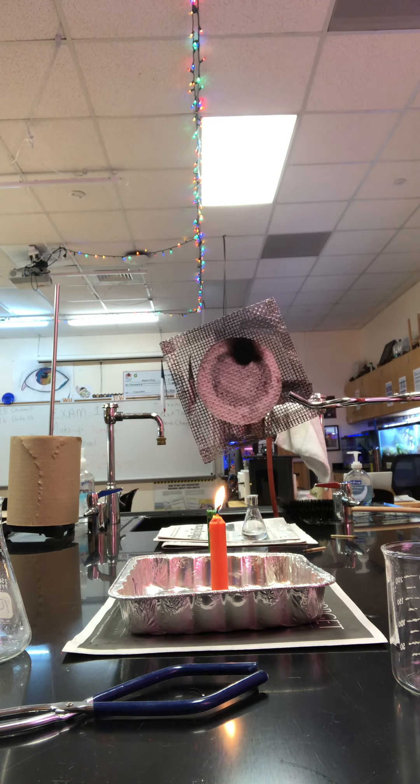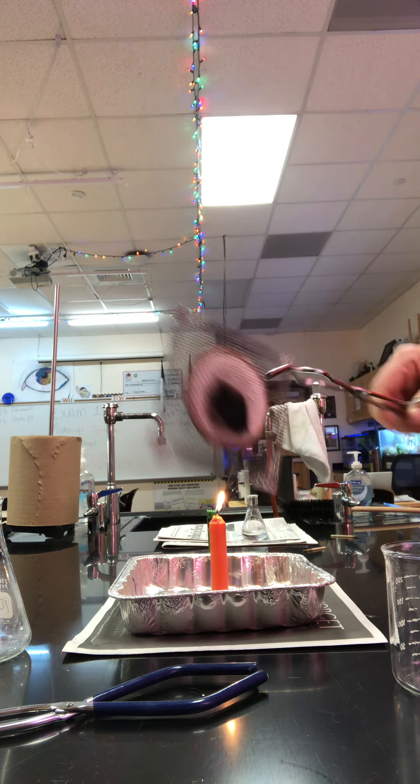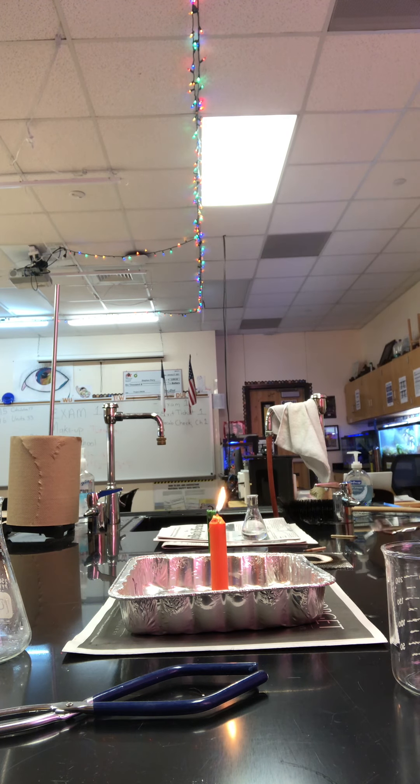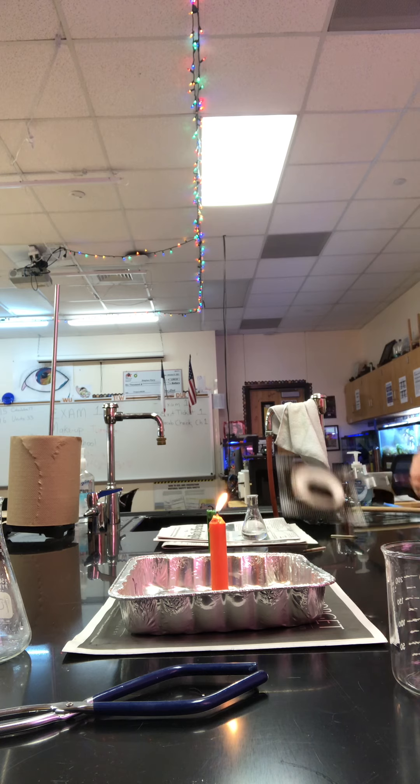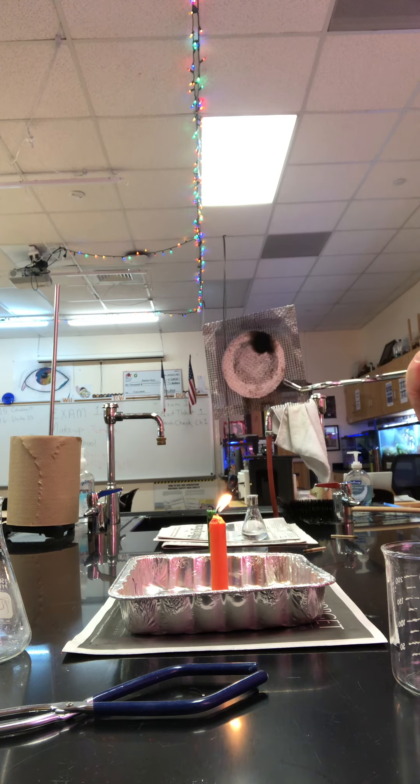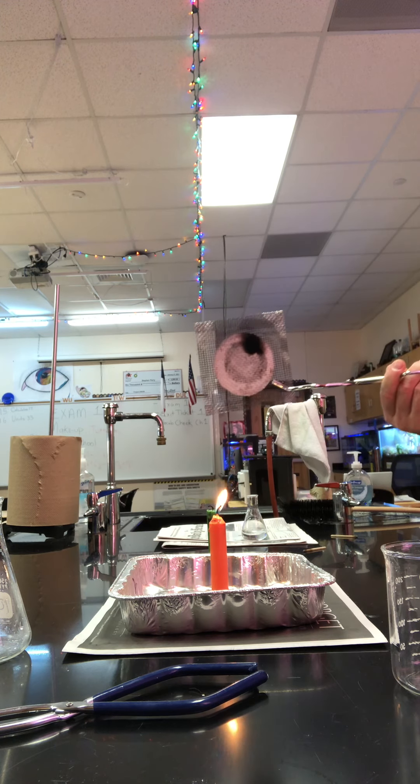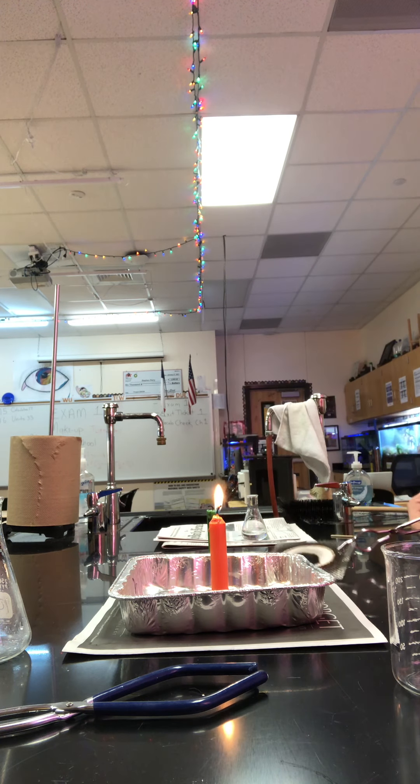And then also makes this black stuff on there. So that's soot. If you're into art, or if you buy paint or ink, you can still buy lamp black. Lamp black is literally originally soot collected from lamps. So the carbon in your candle didn't completely burn and is redepositing itself on the wire gauze.